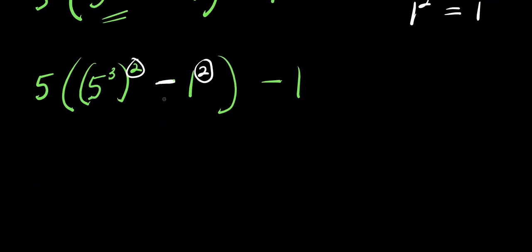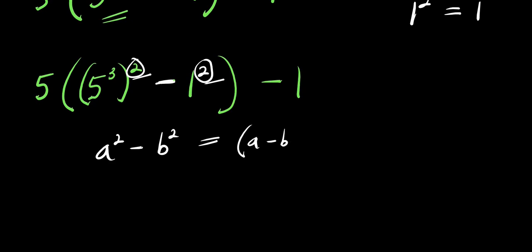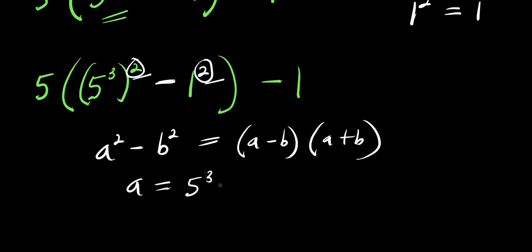There is a minus here, so this is power 2 and this is power 2. I can make use of the difference of two squares. If you have a to the power of 2 minus b to the power of 2, this equals a minus b times a plus b. And in this case, my a is 5 to the power of 3, while my b is 1.